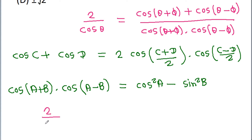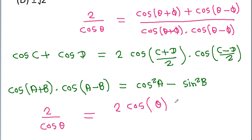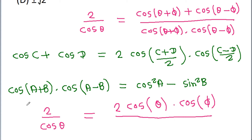We can use the cos C + cos D formula on cos(theta + phi) + cos(theta - phi). So we get 2·cos((theta + phi + theta - phi)/2)·cos((theta + phi - (theta - phi))/2), which simplifies to 2·cos theta·cos phi. And for the denominator, we use the cos(A+B)·cos(A-B) formula to get cos²theta - sin²phi.